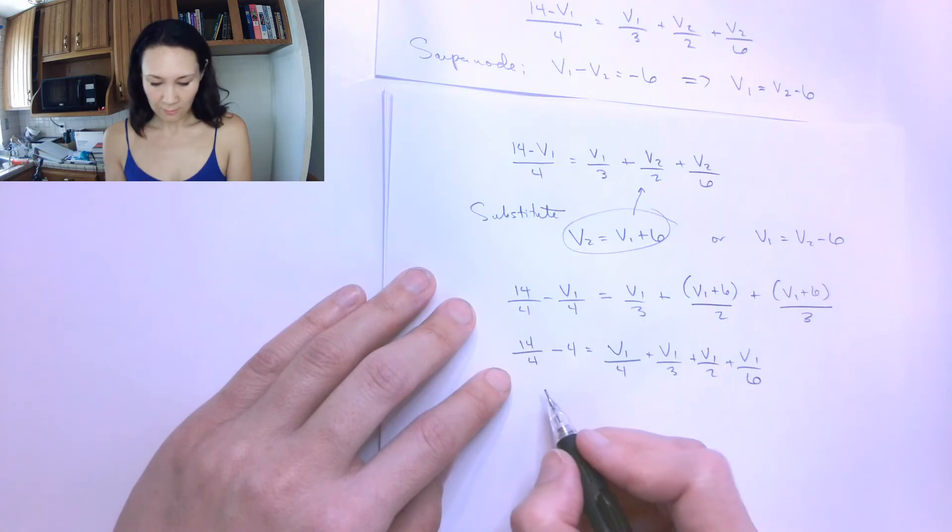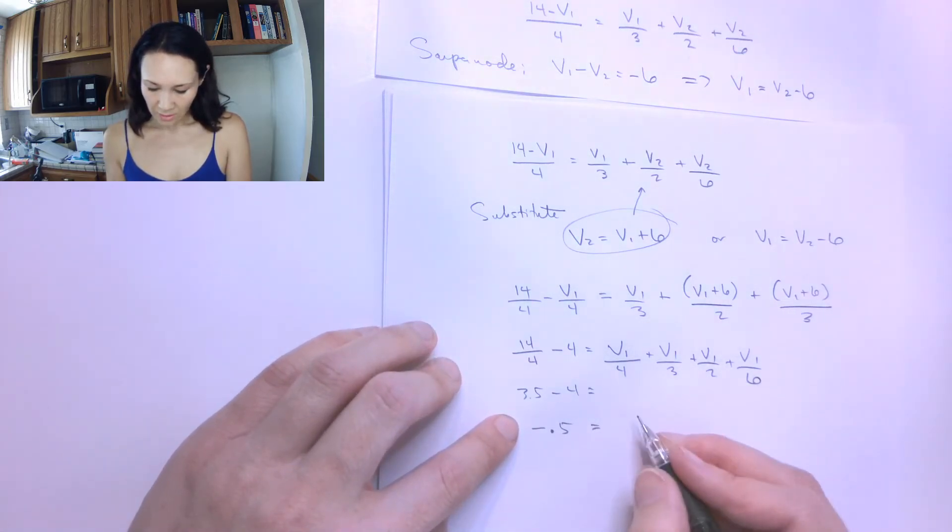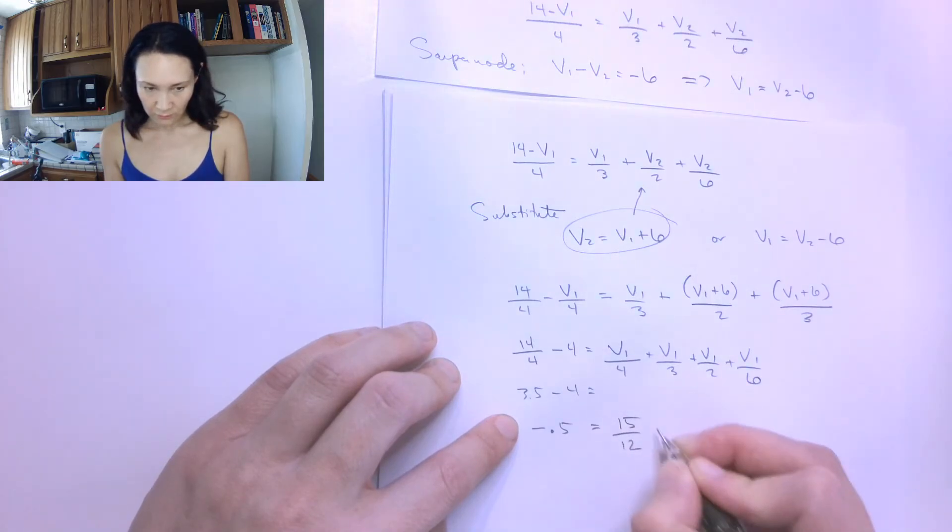So this is going to give me, this is 3.5. 3.5 minus 6 gives me negative 2.5. If I find a common denominator here, this is going to give me 15 over 12 times V1.